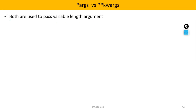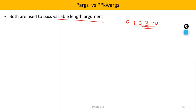So first, both *args and **kwargs are basically used to pass variable length arguments. That means at the time of calling, you can pass zero arguments, one argument, two arguments, three arguments — you can pass any number of arguments based on your requirement.